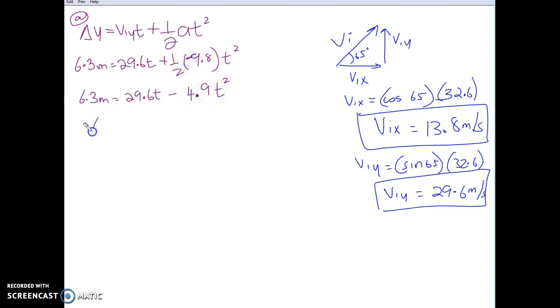Put it in the ax squared plus bx plus c format. And you end up with negative 4.9t squared plus 29.6t, and of course, I'm going to bring it over to the other side, minus 6.3 meters, which equals zero.